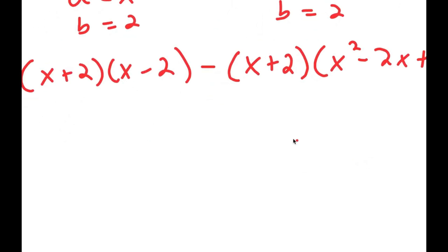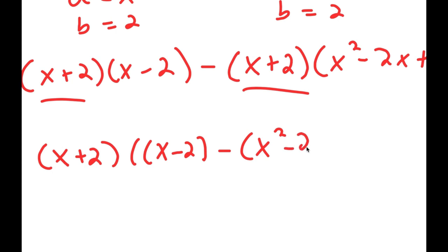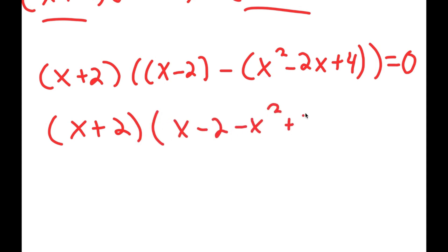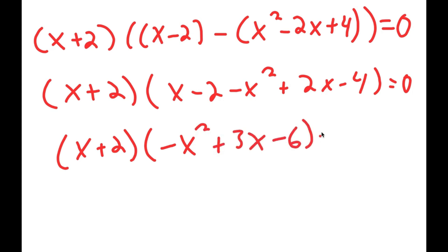From here, I can factor out x plus 2 because both terms have x plus 2. So I get x plus 2 times x minus 2 minus x squared minus 2x plus 4 is equal to 0. Simplifying the bracket: x minus 2 minus x squared plus 2x minus 4 equals 0, and collecting like terms gives negative x squared plus 3x minus 6 is equal to 0.